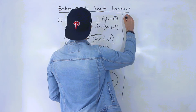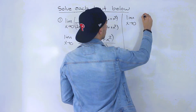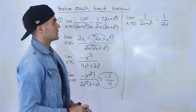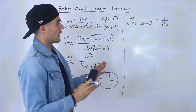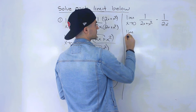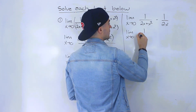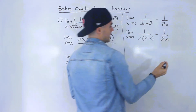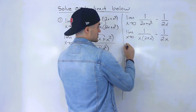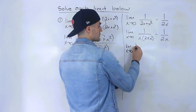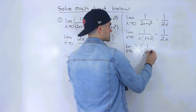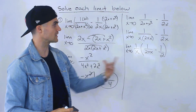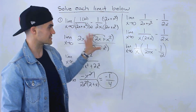Now for the second method — a little less intuitive. Let's rewrite: one over 2x plus x squared minus one over 2x. What we can do is factor out one over x from both of these expressions. So we get one over x times the quantity one over 2 plus x minus one over 2, all in brackets.